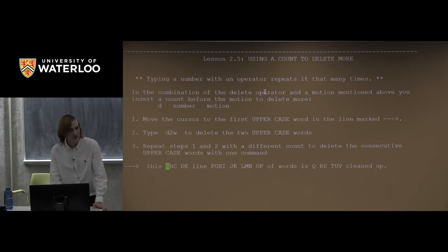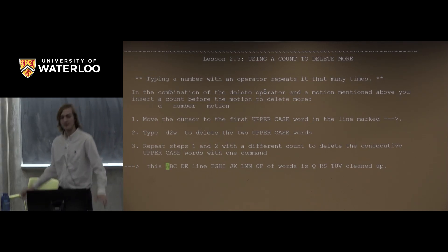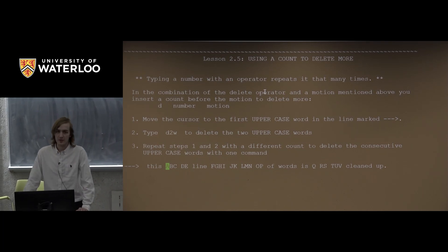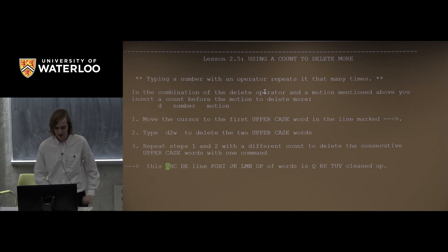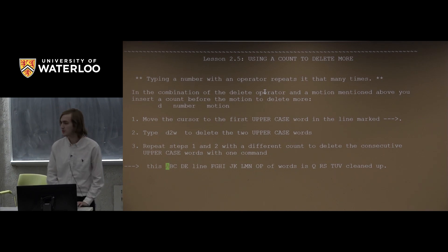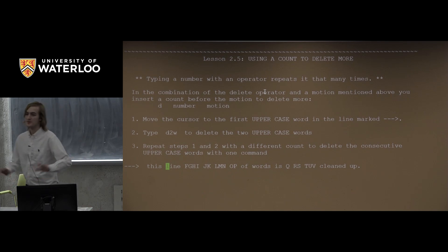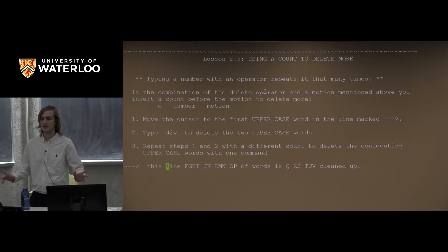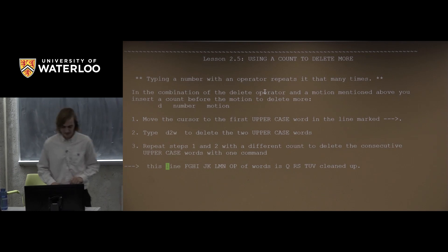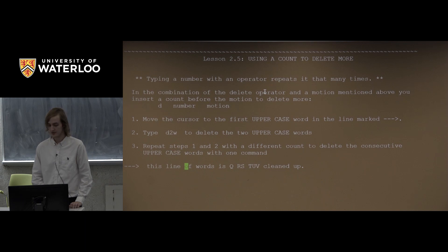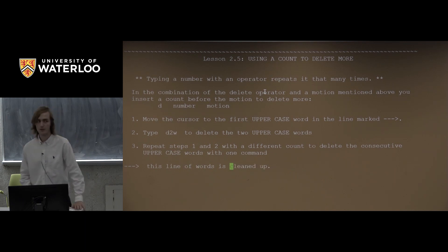They have an exercise to practice deleting multiple words. If I want to get rid of two words, I say D2W — that works exactly like we expect because it expands to 'delete two words.' I can then say D4W to delete four words, and D3W to delete three more words. This is the power of combining operators with numeric multipliers and motions.